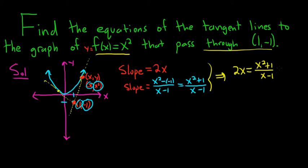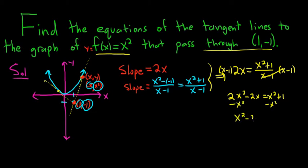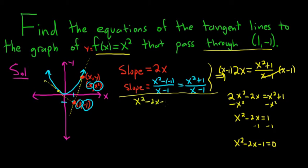And now we have to solve for x. We can multiply both sides by x minus 1. Then we distribute the 2x, so we get 2x squared minus 2x. These cancel, and here we get x squared plus 1. Then subtract the x squared: we get x squared minus 2x equals 1. And then subtract 1: so we get x squared minus 2x minus 1 equals 0.